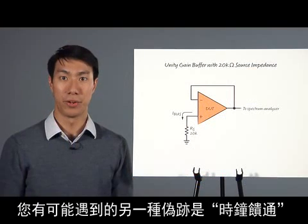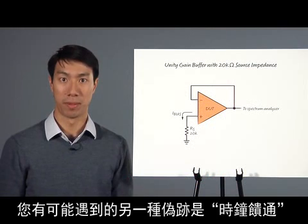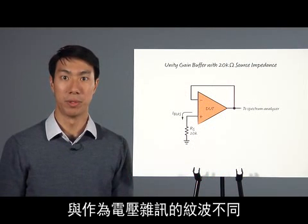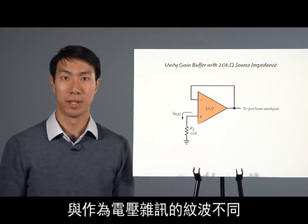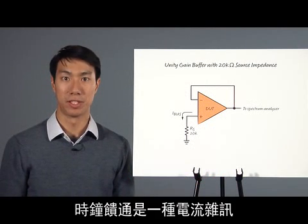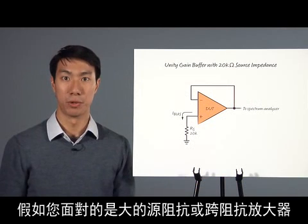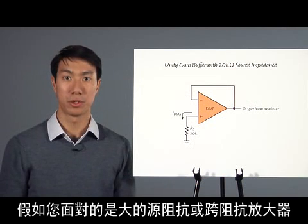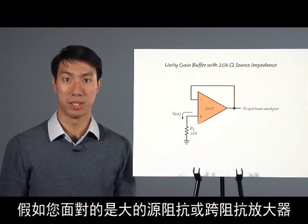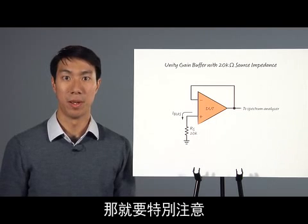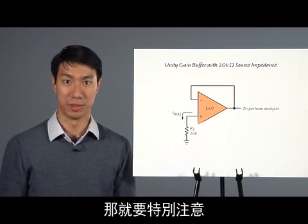Another artifact that you may encounter is clock feed-through. Unlike ripple, which is a type of voltage noise, clock feed-through is a type of current noise. If you are working with large source impedances or a trans-impedance amplifier, pay close attention.